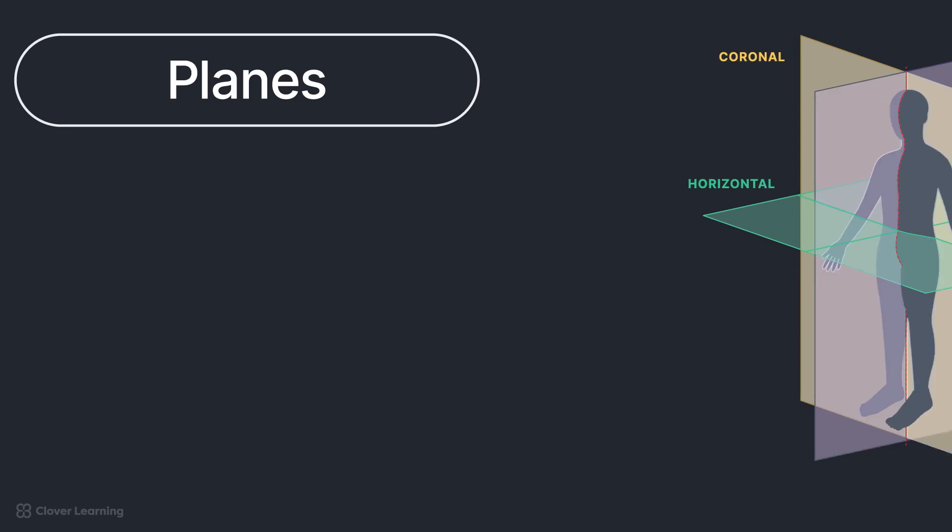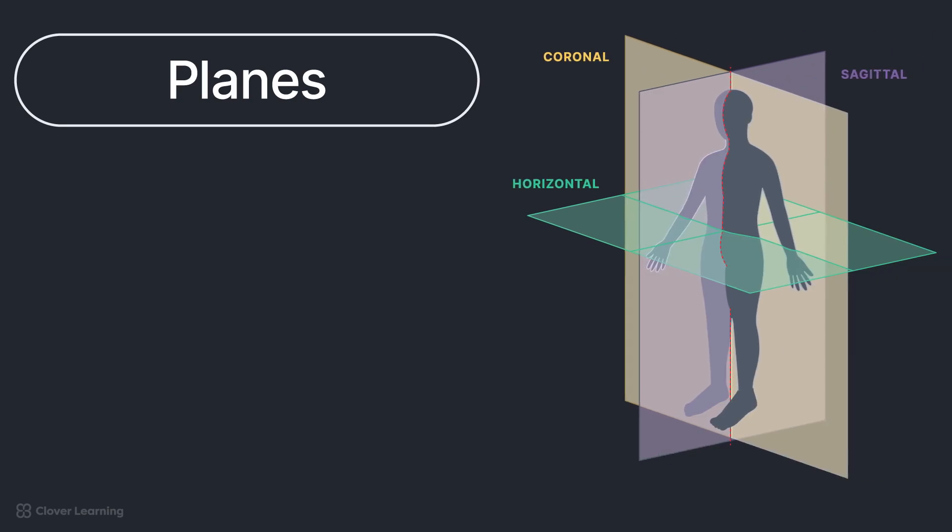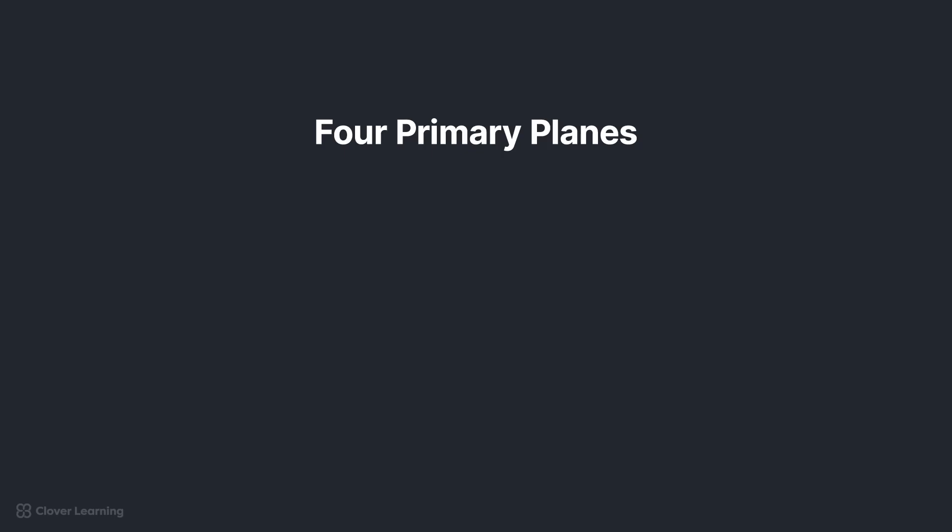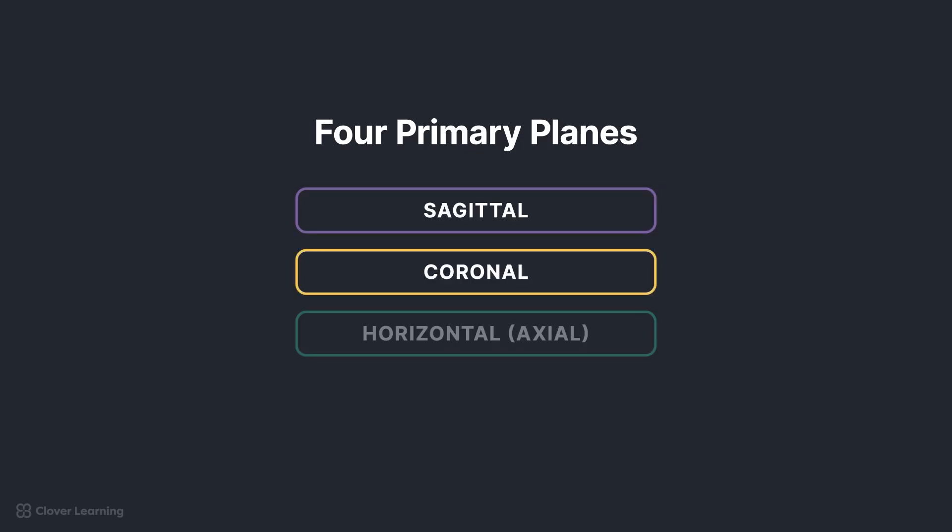The human body, when in anatomic position, can be divided into sections using imaginary planes that intersect the body at specific levels from various angles. Planes are utilized in radiographic positioning to accurately align a body part with the image receptor or central ray, ensuring proper orientation and alignment. Additionally, planes can be utilized to guide the projection of the central ray. The four primary planes are sagittal, coronal, horizontal or axial, and oblique.